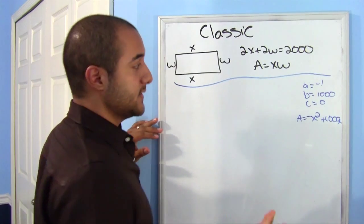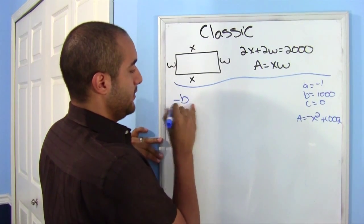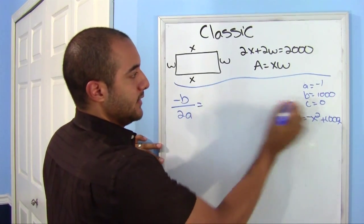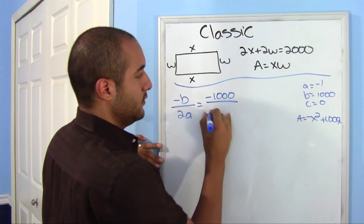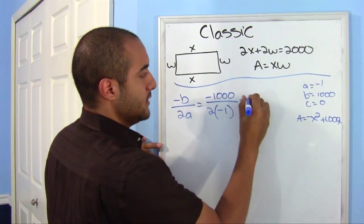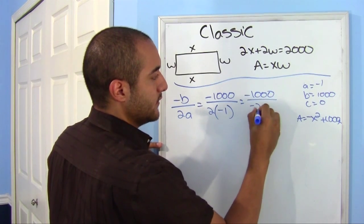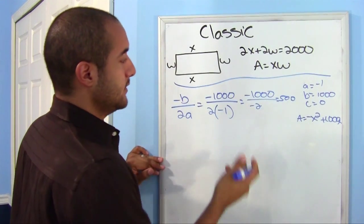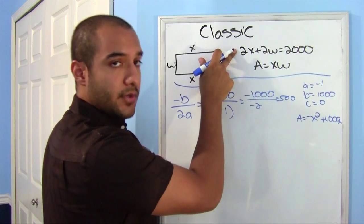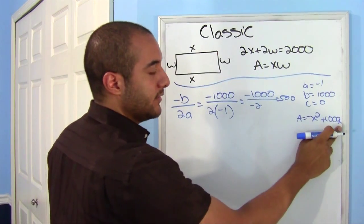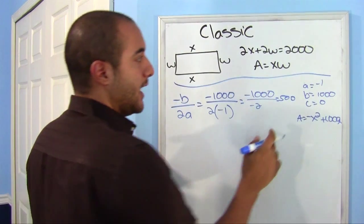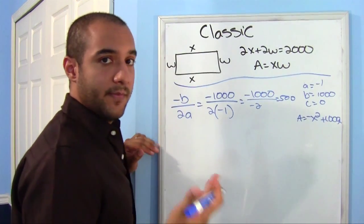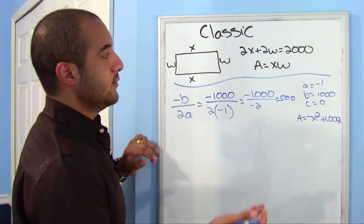Alright, let's go ahead and find out the vertex then. Let's do negative b over 2a. That is negative 1,000 over 2 times negative 1. So it's negative 1,000 over negative 2. This is just 500. Now, you have a choice. You can find out the w by putting it into our perimeter, or you can put it into our modified area, whichever one you choose is up to you. I'm just going to go ahead and do this one, because the question is, what is the maximum area, not what are the dimensions?